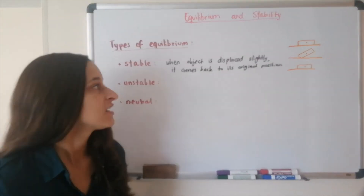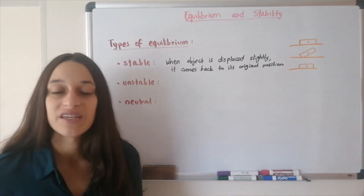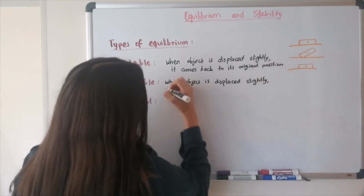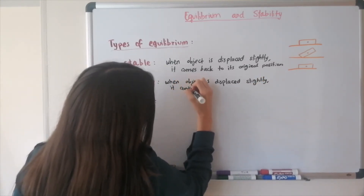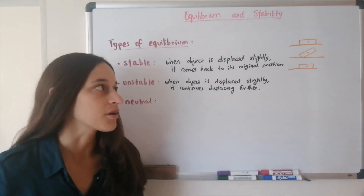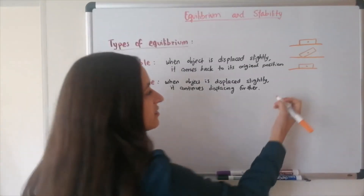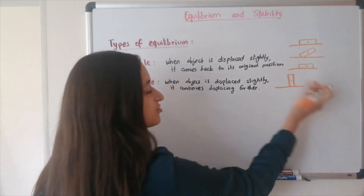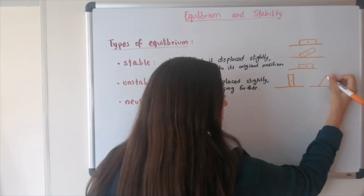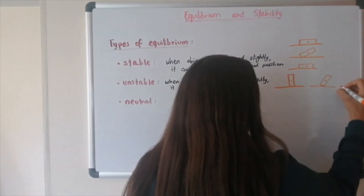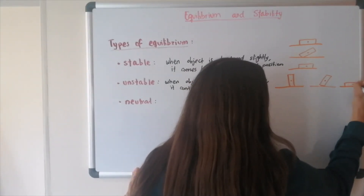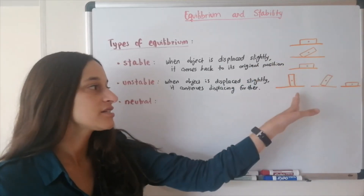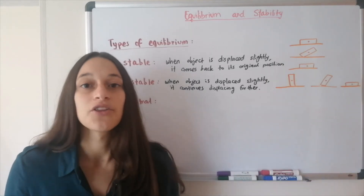Unstable equilibrium is when an object, if displaced slightly, continues displacing even further. An example is the same book, but instead of lying flat, it's standing up on its short side. If you displace it slightly to the right and let go, it'll continue falling and end up lying flat on its back. So in stable equilibrium displacing it makes it come back, while in unstable equilibrium displacing it a little makes it continue falling to another position.